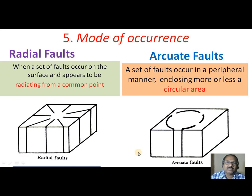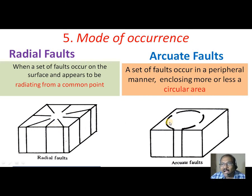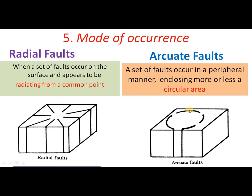Based on origin or mode of occurrence, we have radial faults and arcuate faults. Radial faults occur on the surface and appear to radiate from a common point, with faults occurring in different directions from that point. In case of arcuate faults, a set of faults occur in a peripheral manner, enclosing more or less a circular area — hence called arcuate faults.